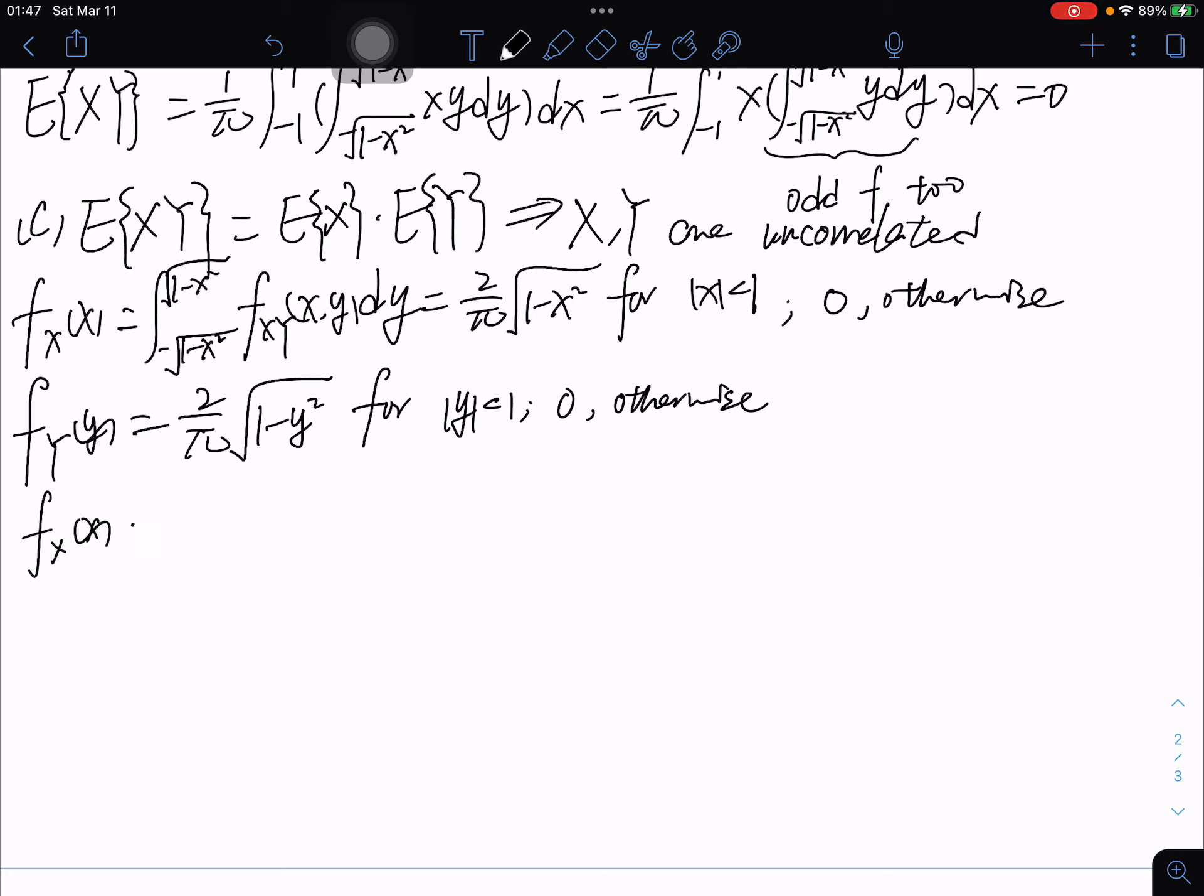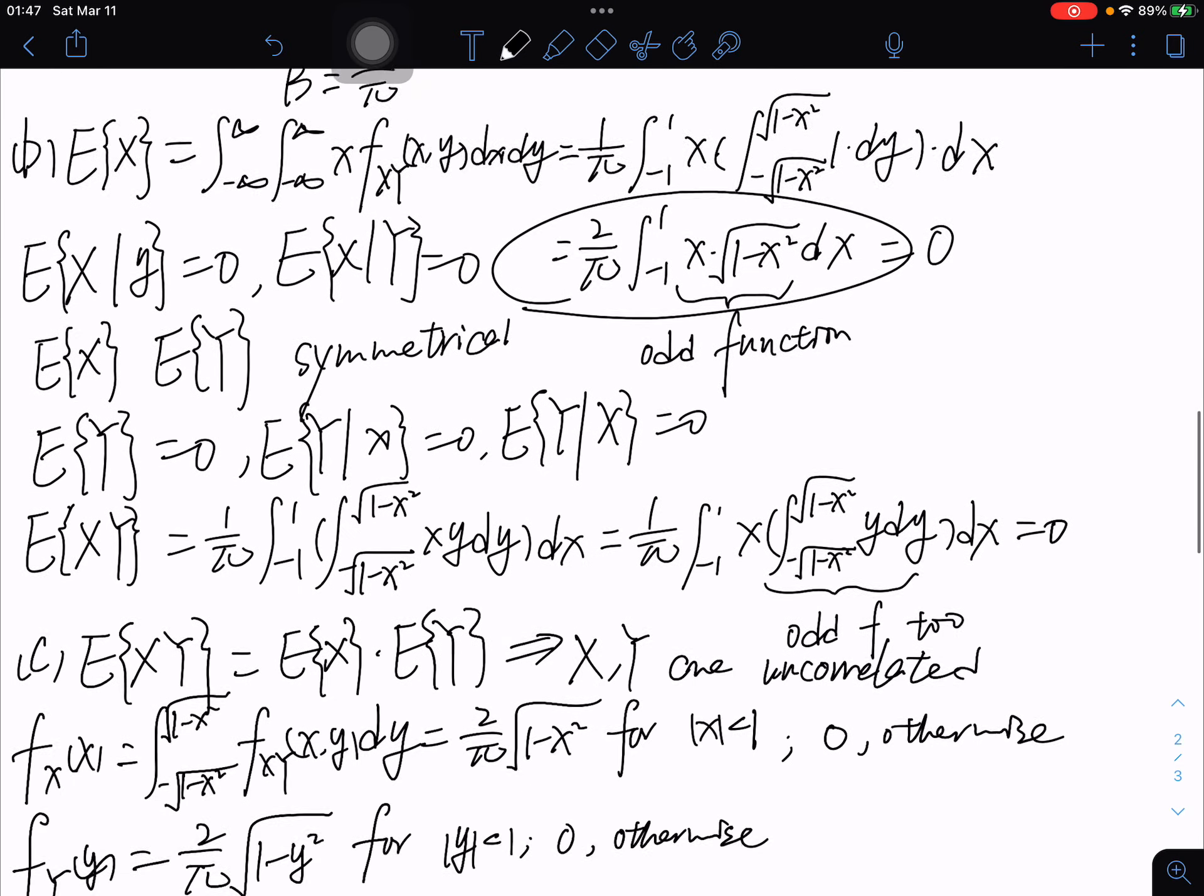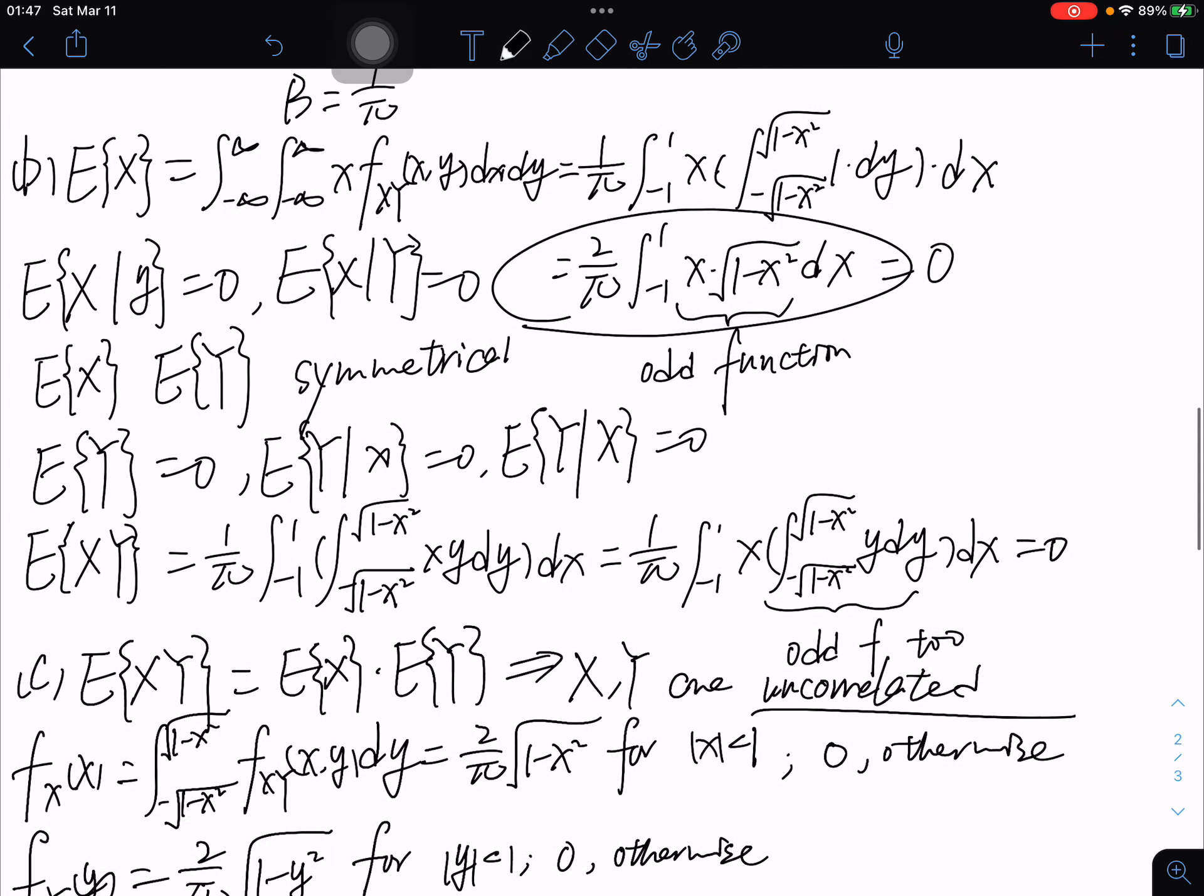f_X·f_Y equals (π/2)². We can see that f_X·f_Y are not equal to f(x,y), so we can get that X and Y are not independent. So in this way we prove that X and Y are uncorrelated and are not independent. That's all, thank you.